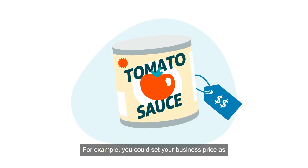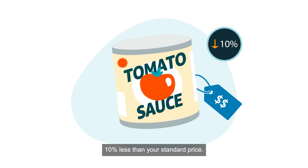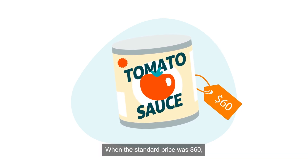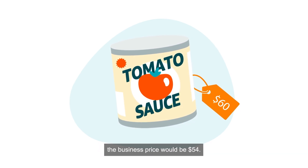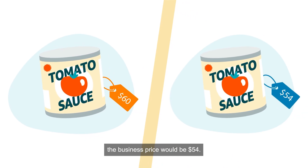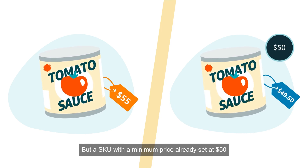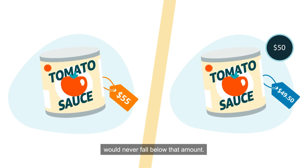Any pre-existing minimum prices you've already set for individual SKUs will remain in place. For example, you could set your business price as 10% less than your standard price. A SKU with no minimum price from other pricing rules would always use this discount as a lower pricing limit. When the standard price was $60, the business price would be $54. And when the standard price dropped to $55, the business price would still be 10% off, or $49.50. But a SKU with a minimum price already set at $50 would never fall below that amount.